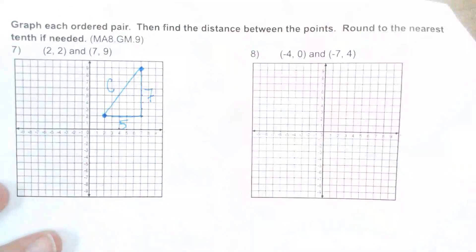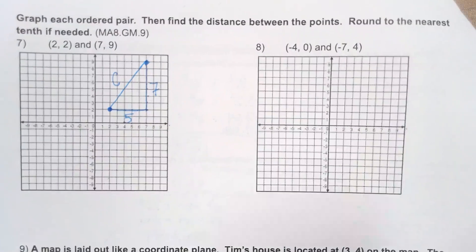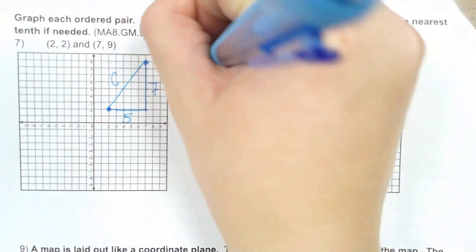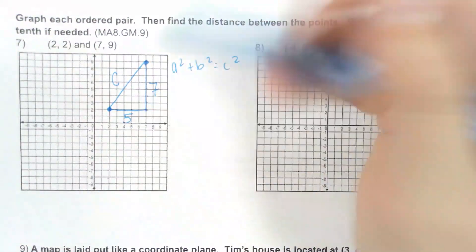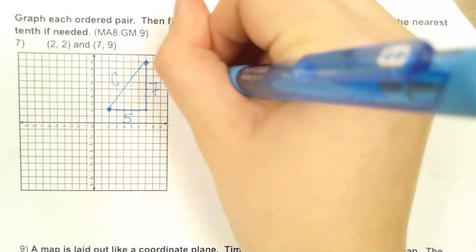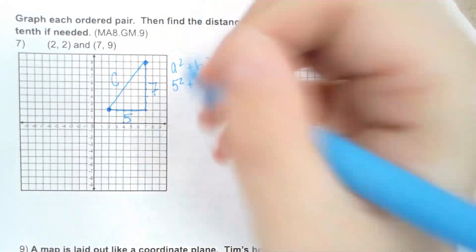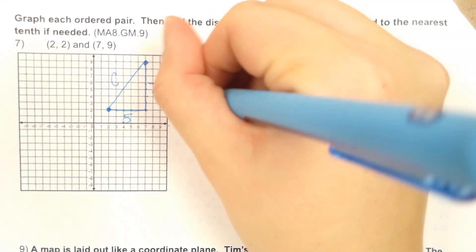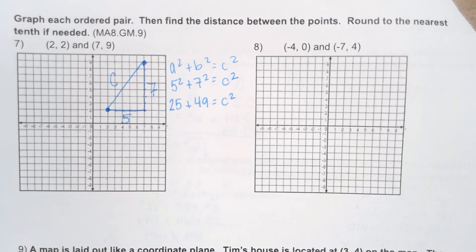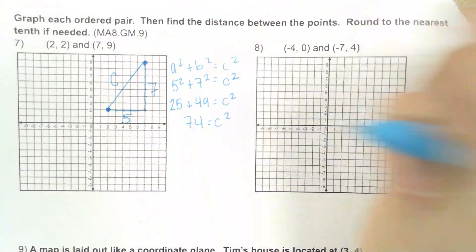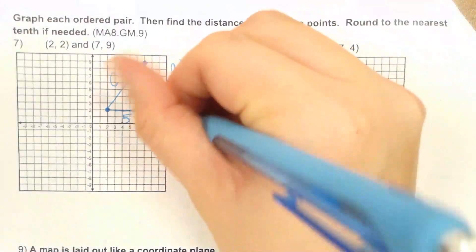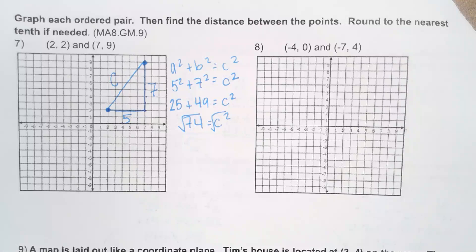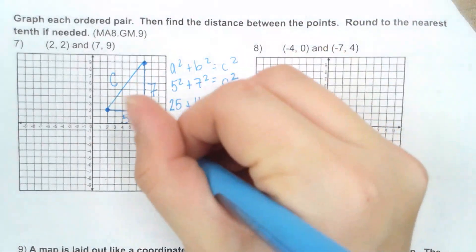I'm going to use those leg measurements to find my distance. Start with a² + b² = c². 5 and 7 are the legs, so I plug those in for a and b. 5² = 25, 7² = 49. Adding 25 and 49 gives 74. Taking the square root of 74 rounded to the nearest tenth gives me 8.6.